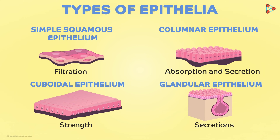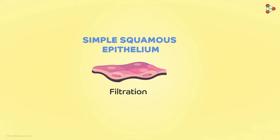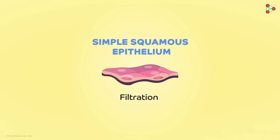We've had an introductory look at the epithelial tissues in short. Now let's move ahead to know the types of these epithelial tissues in detail, beginning with the first one which is the simplest of all: the simple squamous epithelium.